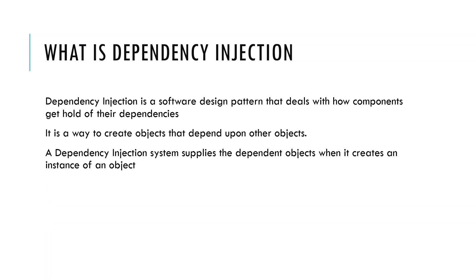What is dependency injection? Dependency injection, or DI, is a software design pattern that deals with how components get hold of their dependencies. It is a way to create objects that depend upon other objects. The dependency injection system supplies the dependent object when it creates an instance of the object.